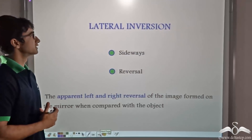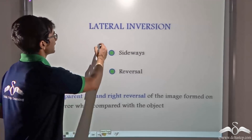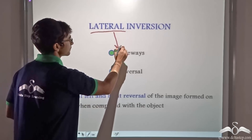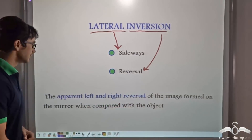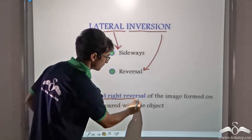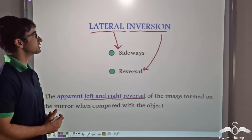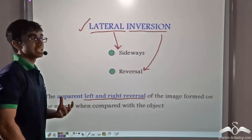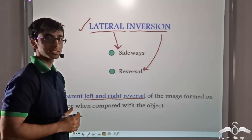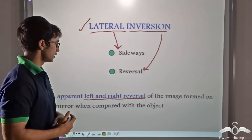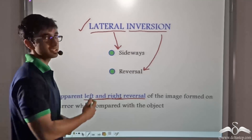This left-right reversal is known as lateral inversion. What is lateral inversion? Here, 'lateral' means sideways and 'inversion' means reversal. So the apparent left and right reversal of the image formed on the mirror when compared with the object is known as lateral inversion. In the case of the boy standing in front of the mirror, we saw that when the boy raised up his right hand, the image raised up its left hand — so there was a left and right reversal. This reversal is known as lateral inversion.